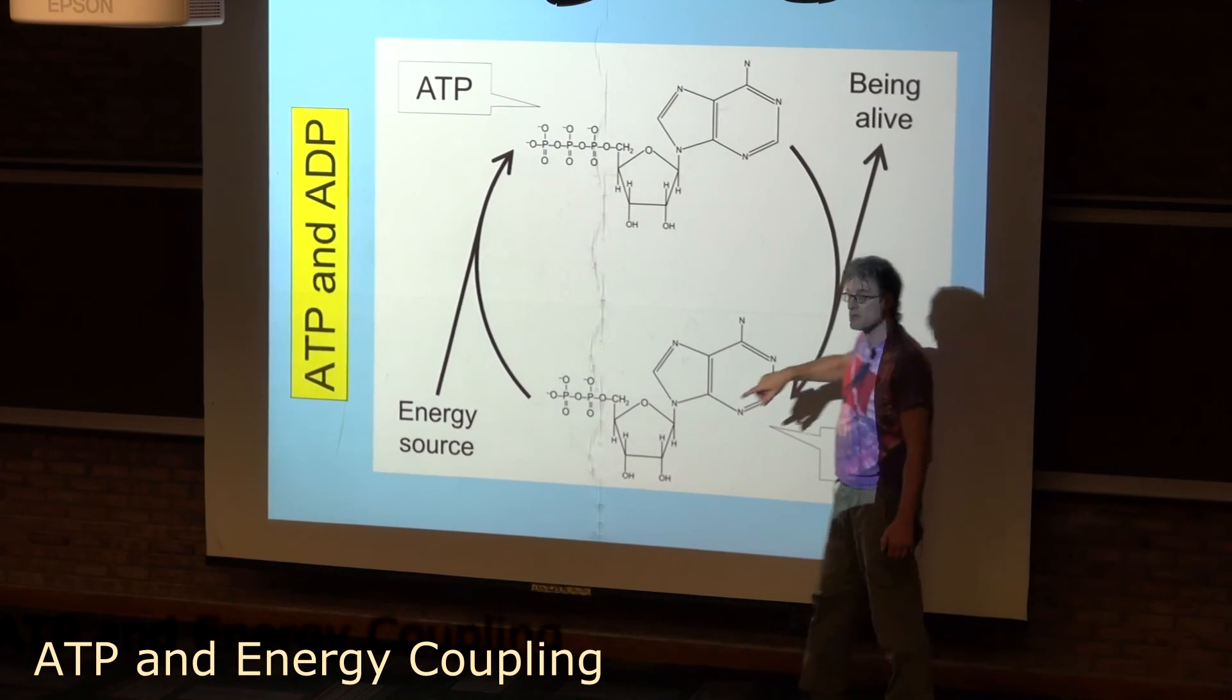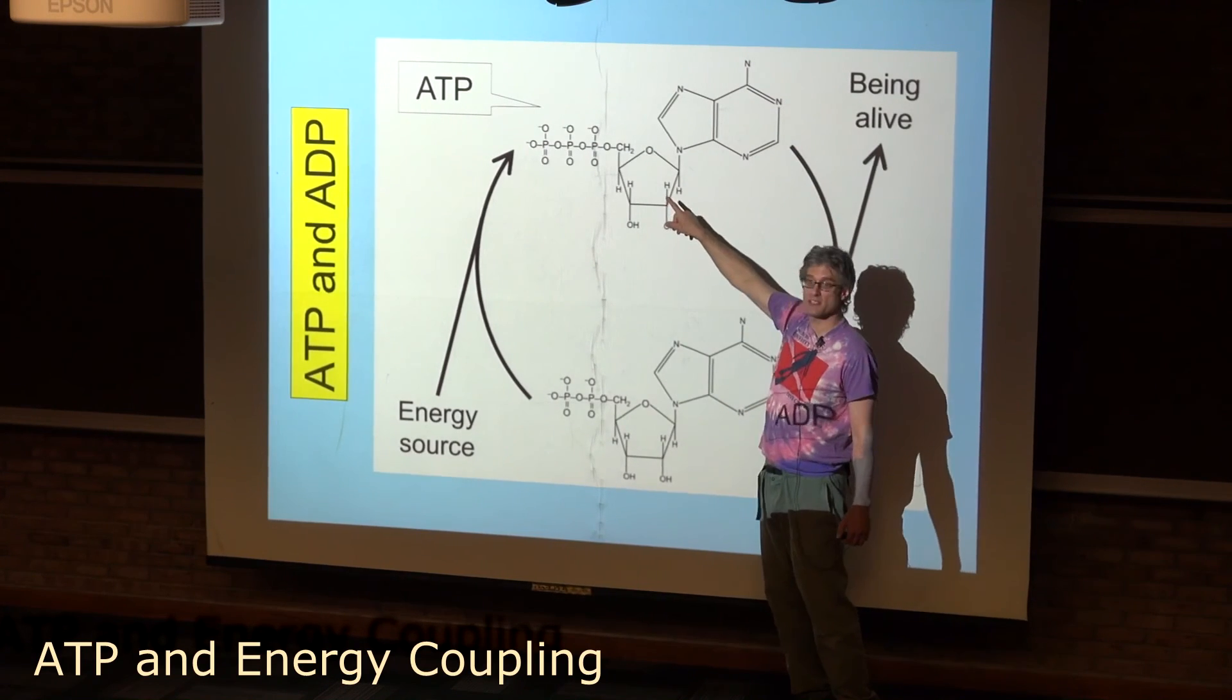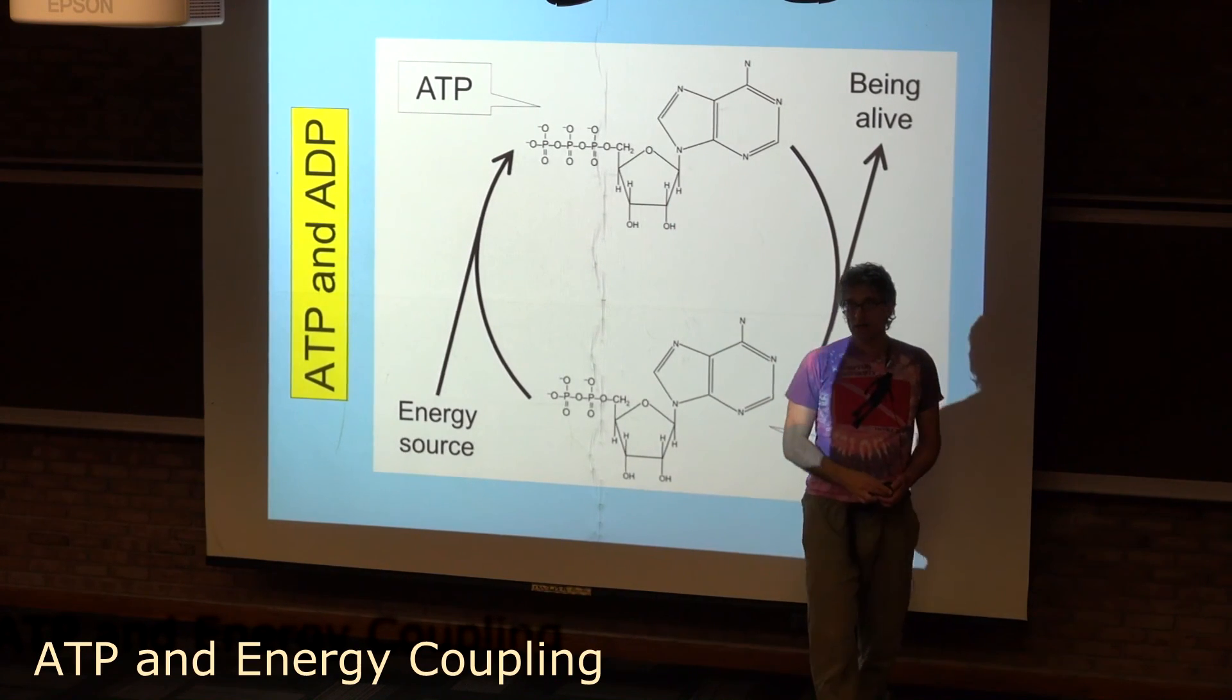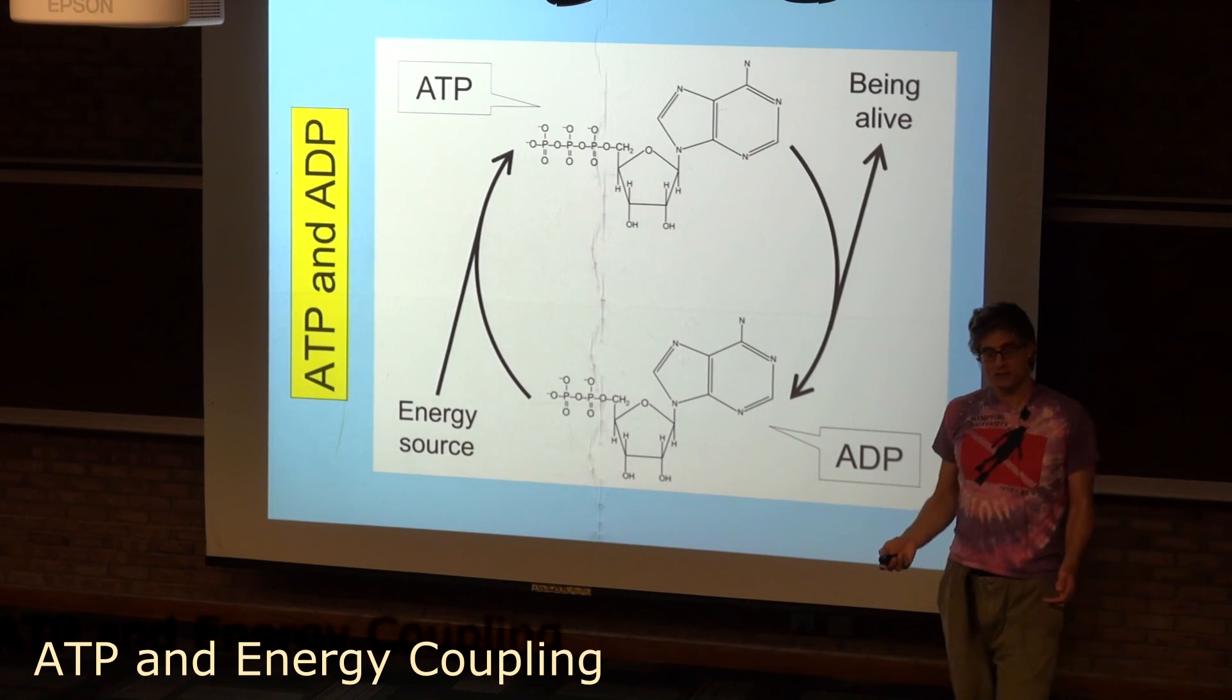And the coupling more or less involves taking ADP, converting it to ATP, and back again. So then the question is, how do cells take ADP and produce ATP?